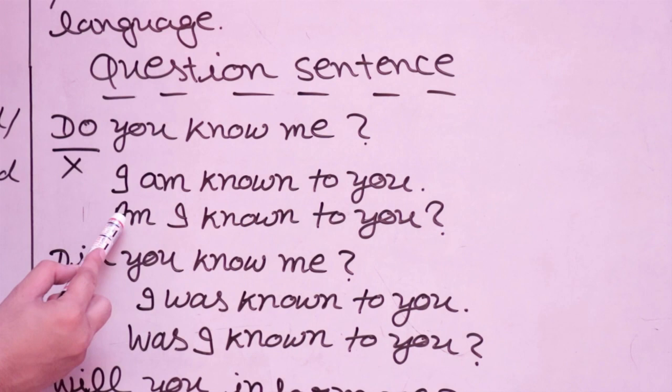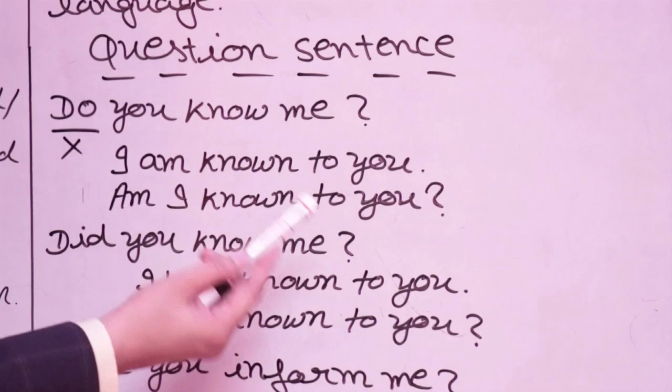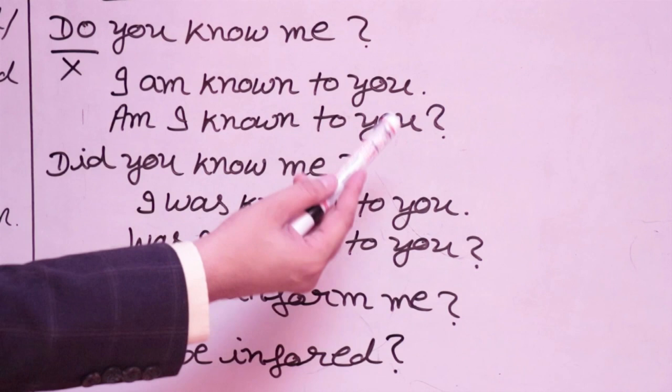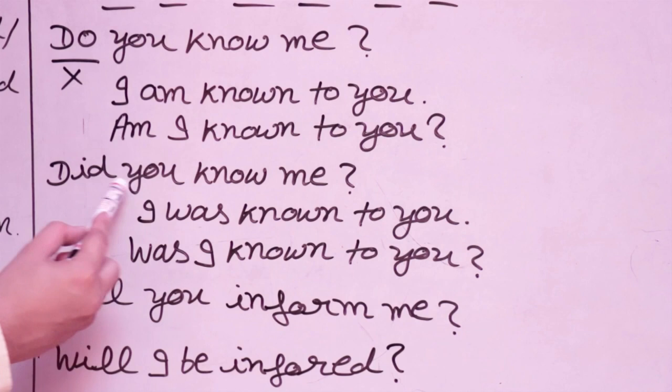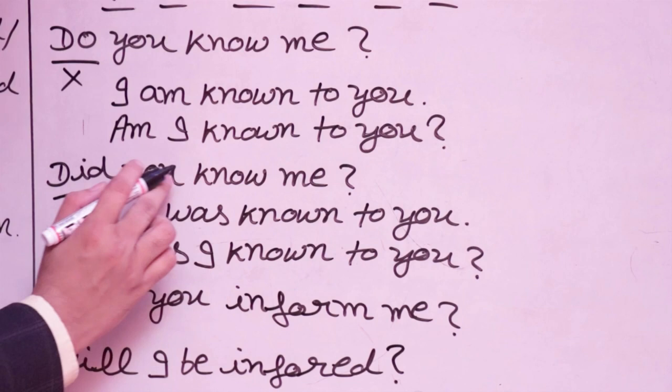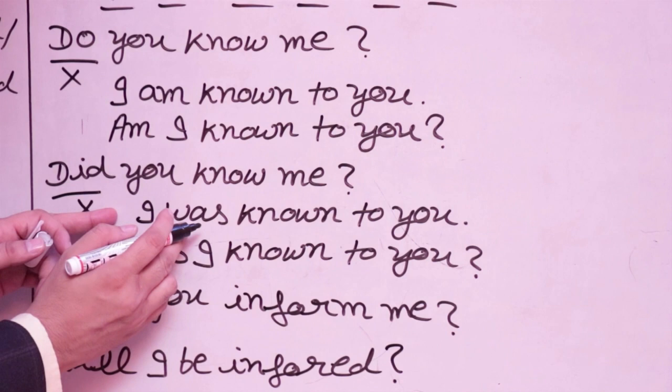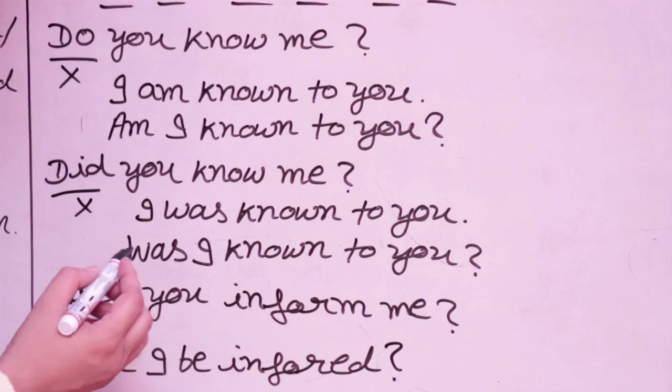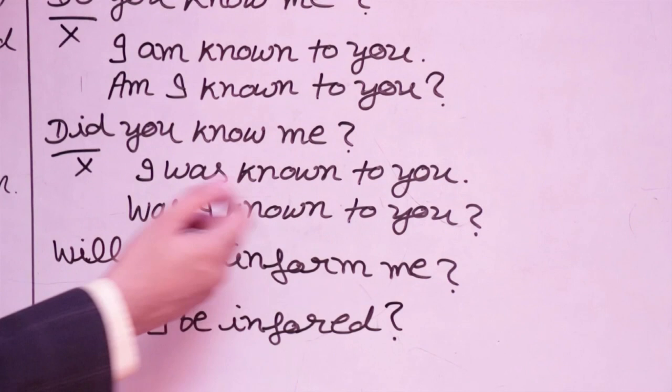Past question: 'Did you know me?' Treat as 'You knew me.' Me changes to I; past tense so 'was.' 'I was known to you.' Bring 'was' forward: 'Was I known to you?' — meaning 'Did you know me?' Future: 'Will you inform me?' Models don't change. 'Will I be informed?' — meaning 'Will you inform me?' The model verb stays at the front.